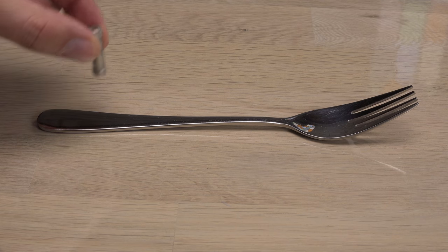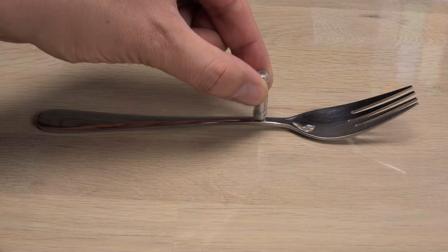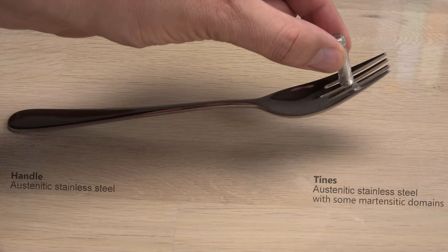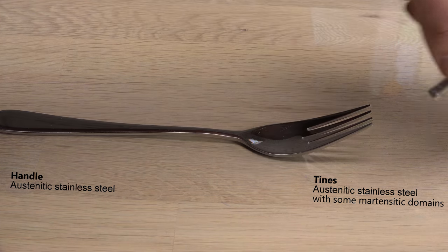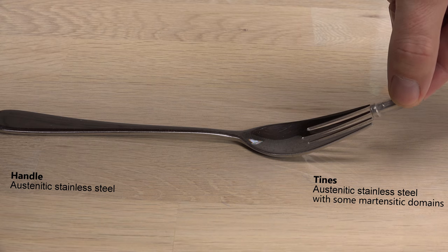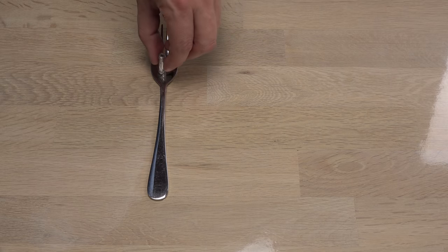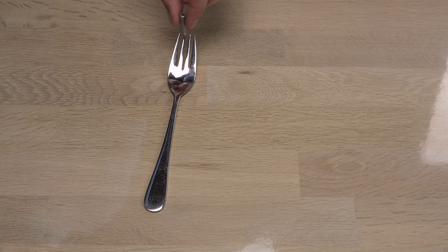Even this fork made of stainless steel, which is mostly iron, has different magnetic reactions depending on which end I test. The elements in stainless steel can form different crystalline structures. The cold work done to the tines changed the crystalline microstructure slightly, making them more magnetic than the handle. Still not very magnetic, even though there's a lot of iron in this fork.